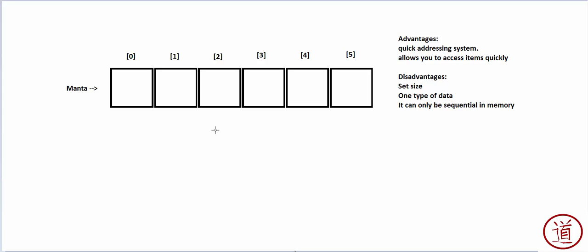Another problem is with sorting. If you wanted to insert an item in between existing elements and the array was full, you'd have to shift all the spots over to make room. For a size-six array that doesn't seem so bad, but for a 300,000-element array, that shifting can be really expensive in terms of processing. Also, sometimes it would be nice if you could link different types of data in a structure.